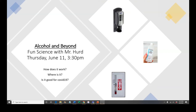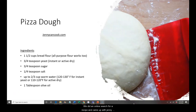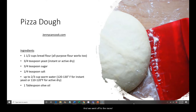What we talked about last week — pizza dough! We had fun with pizza dough last week and we talked about yeast and the chemical reaction that happens with yeast. We did an online search for a recipe and came up with JennyCanCook.com. It's a pretty simple recipe: one and a half cups of bread flour, three quarters teaspoon of yeast, three fourths teaspoon of sugar, one fourth teaspoon of salt, two thirds cup of warm water, and one tablespoon of olive oil.